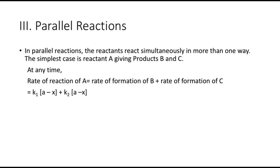The last type of complex reactions is parallel reactions. Parallel reactions are those in which the reactants react simultaneously but in more than one different way, resulting in different products. A gives product B in one way with rate constant K1, and product C in another way with rate constant K2. At any point of time, the rate of reaction of A is the sum of the rate of formation of B and rate of formation of C: K1(A - X) + K2(A - X), where A is the initial concentration and X is the concentration of reactant consumed.